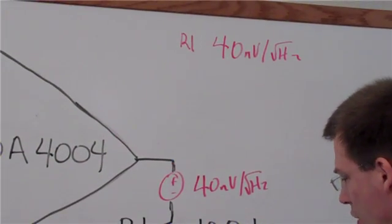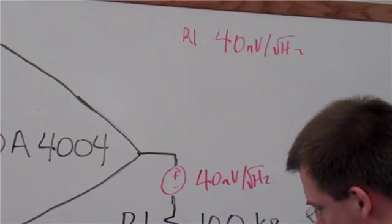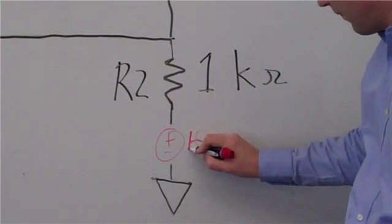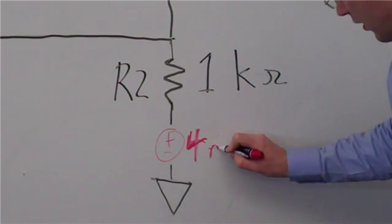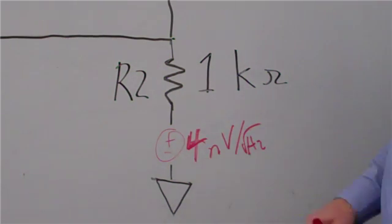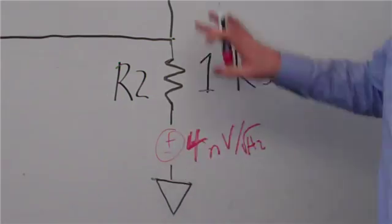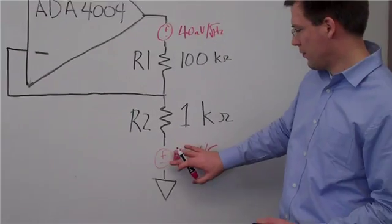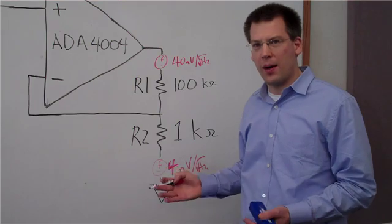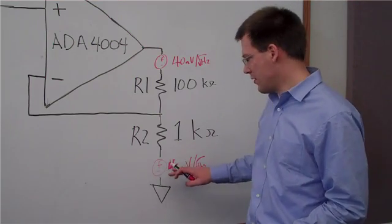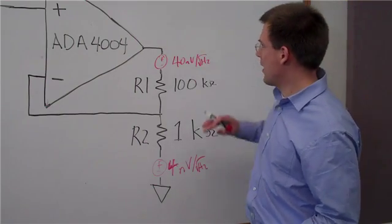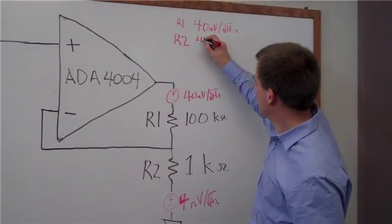Let's look at R2. R2 is a 1 kilohm resistor. If I draw in our voltage source here, it's 4 nanovolts per root hertz. This voltage source is as if it's at the input of an inverting configuration. So this voltage source we multiply by negative 100, and since there's really no concept of negative or positive with noise sources, it really just ends up being 4 times 100. Referred to the output, this will turn into 400 nanovolts per root hertz.